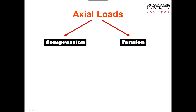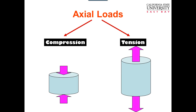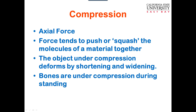The first type of load is axial loads. We have compression — basically you squish the tissue. Cartilage is under compression, bone is under compression. Then we have tension where you stretch or lengthen your tissues. Compression is an axial force that tends to push or squash molecules of the material together. The object under compression deforms by shortening and widening — if you take a donut, it kind of shortens and widens under your compressive force. Bones are under compression during standing.